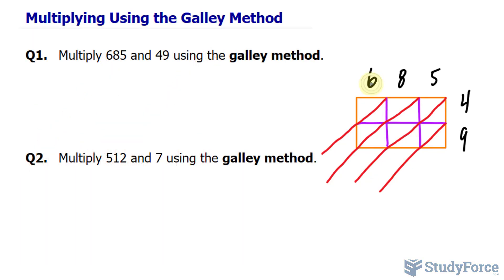Okay, the reason why we do that is because we now multiply 6 and 4. That's 24. So the 20 is the tens place value. We put it right here. And the 4, the ones place value goes in that corner. 8 times 4 is 32. 5 times 4 is 20.